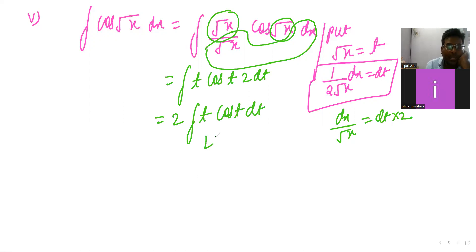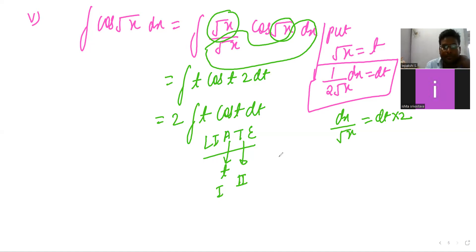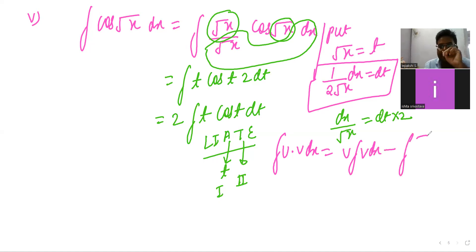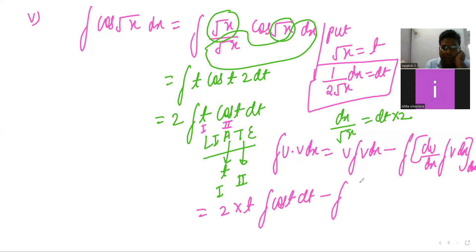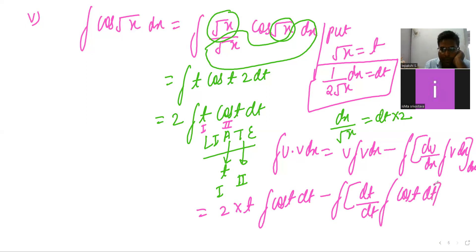Start solving by applying the U·V rule. Integration of U·V: take U as constant outside, times integration of V dt, minus integration of differentiation of U by dt times integration of V dt, whole dt. So U is t and V is cos(t). This gives 2: t outside, integration of cos(t) dt, minus integration of dt/dt times integration of cos(t) dt, whole dt.